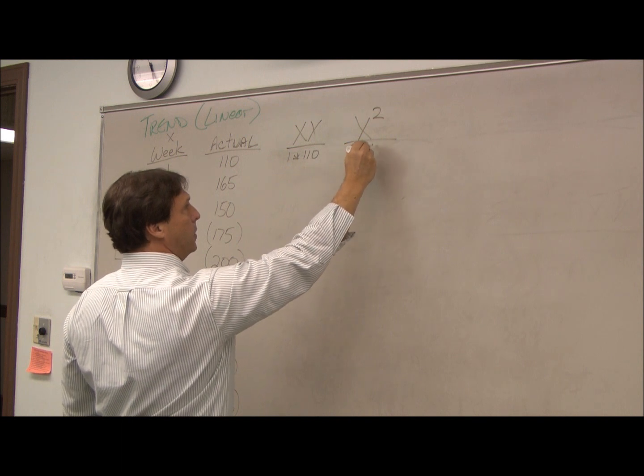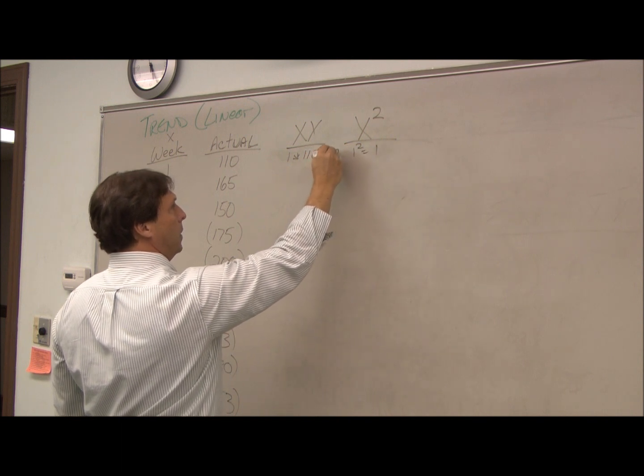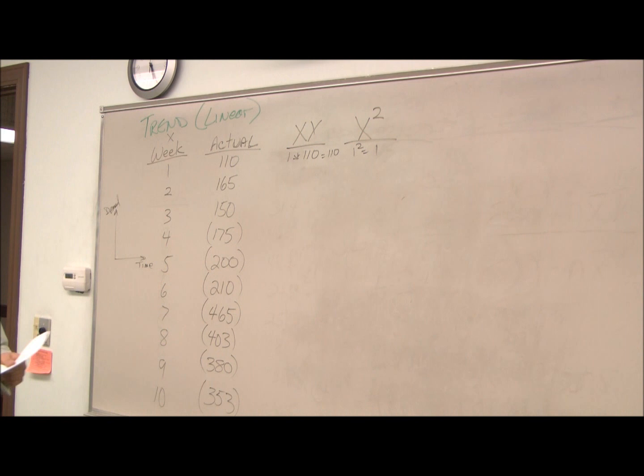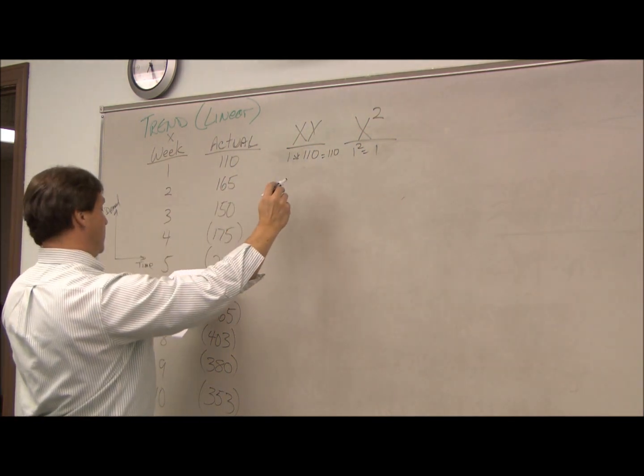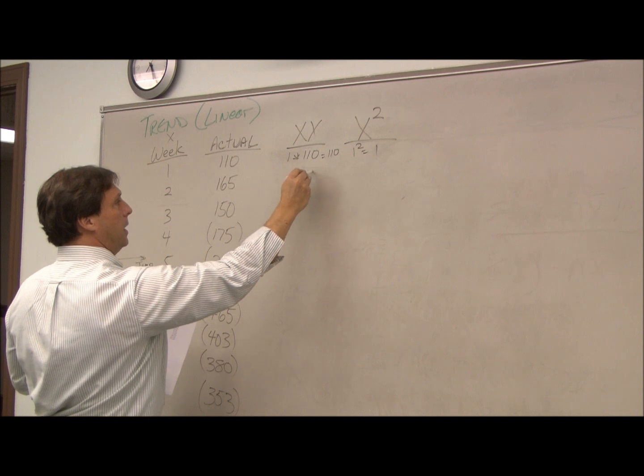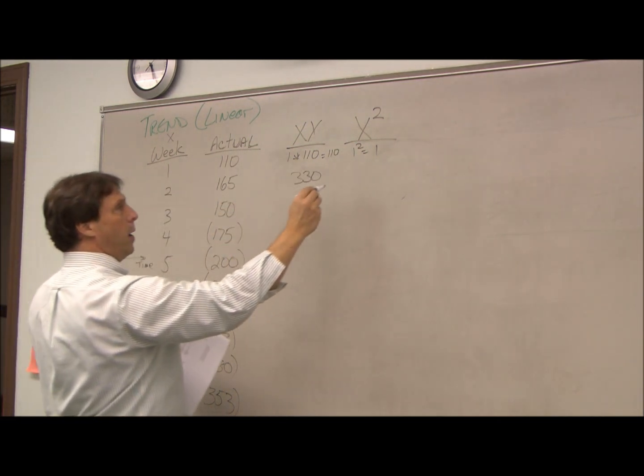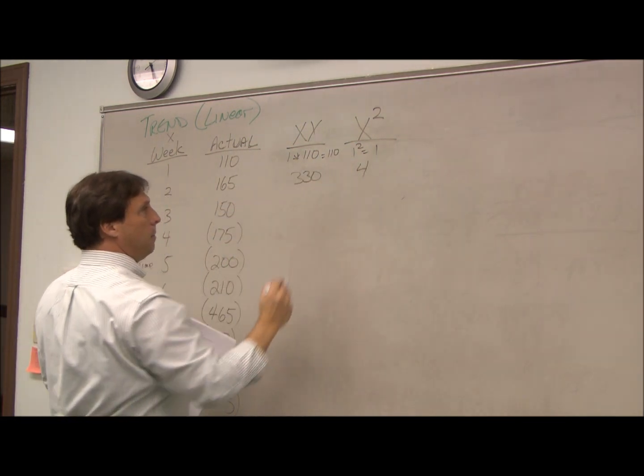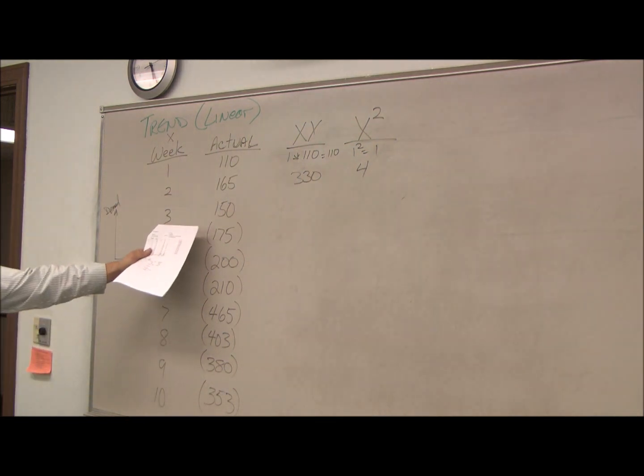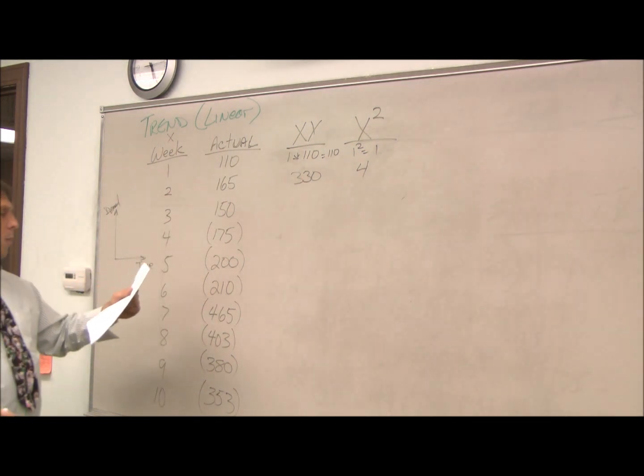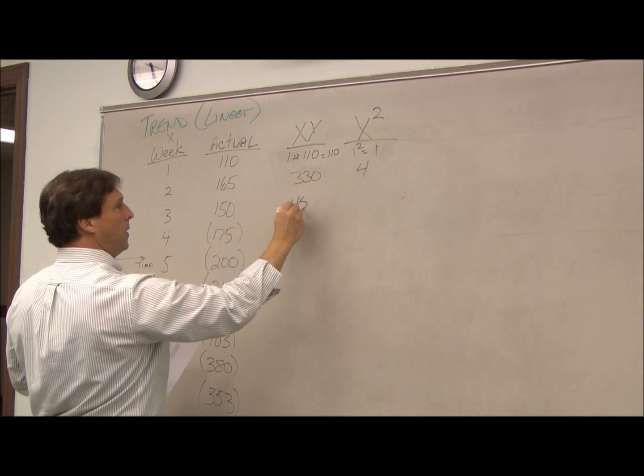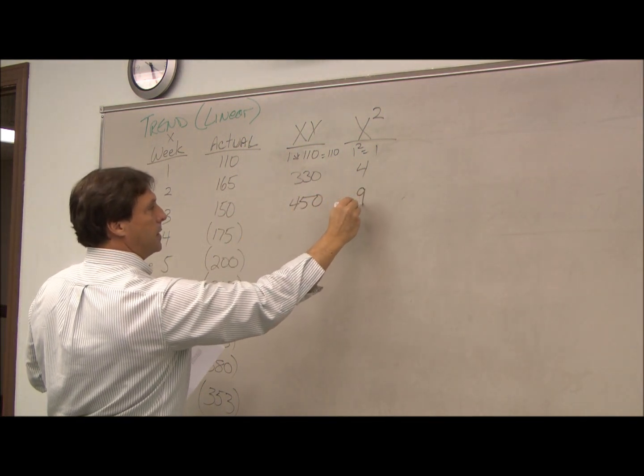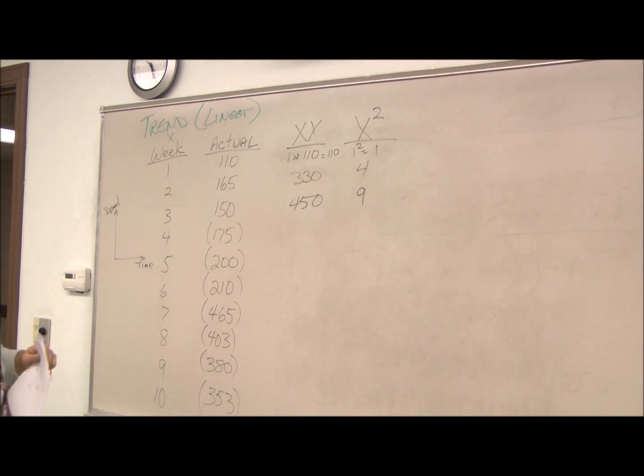And we just keep going right down the list that way. 2 times 165 is 330. 2 squared is 4. I'll do one more. So, we have 150 times 3 is 450. 3 squared is 9. We just keep going down the list that way.